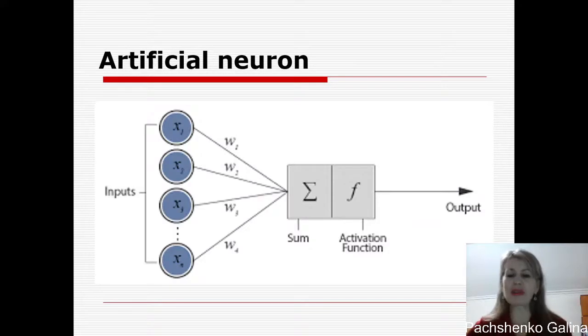For example, here you can see artificial neurons with inputs that are x1, x2, x3 and so on until xn, and weights that are w1, w2 and so on until wn.